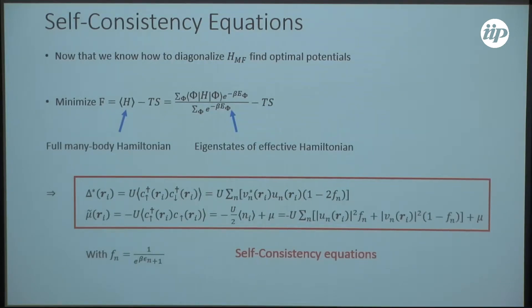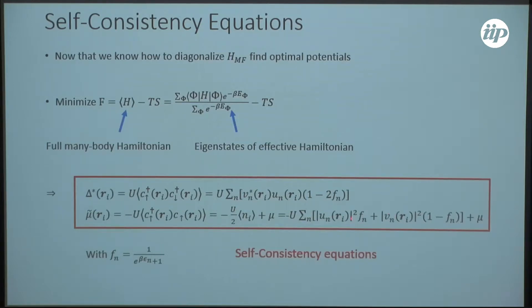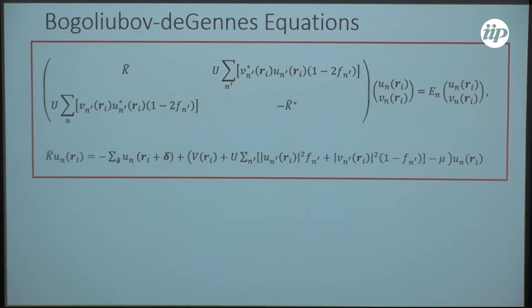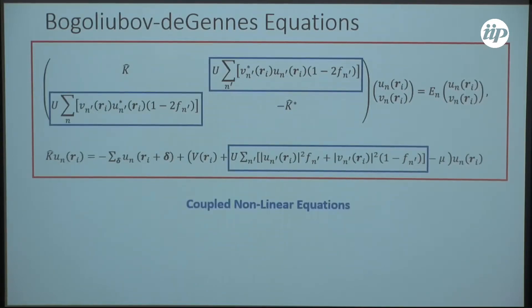Now we know the equations for how to get our eigenstates. We want to know what is the optimal choice of our delta and µ in terms of these eigenstates. For this, we minimize the free energy of the full many-body Hamiltonian with respect to the eigenstates of the mean-field Hamiltonian. So this leads to the self-consistency equations. We now have delta in terms of the particle and hole wave functions and also µ in terms of the particle and hole wave functions. Putting everything together, we end up with coupled nonlinear equations with the nonlinearities marked here.